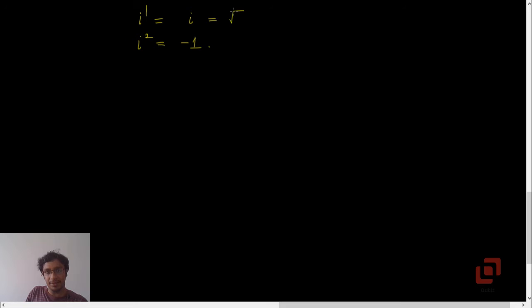So obviously, if we square i you should get minus 1. Let's now talk about i cube. i cube will be i squared into i, but how much is i squared? Minus 1. So i cube is minus i. And i raise to 4 will be i squared into i squared, which is minus 1 squared, because i squared is minus 1, so this will be 1.